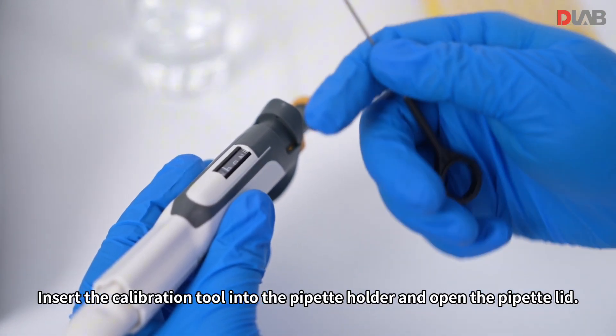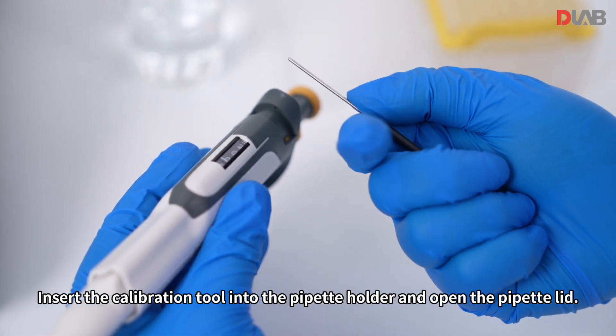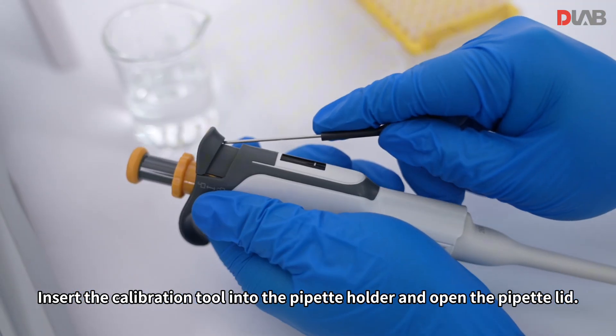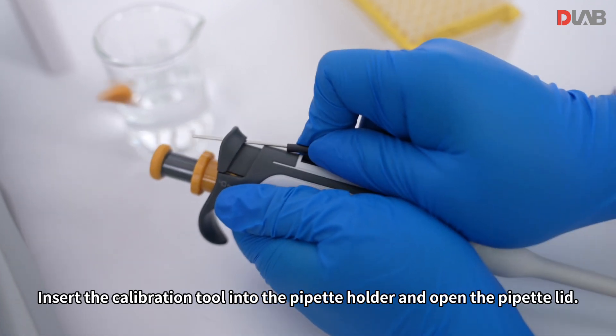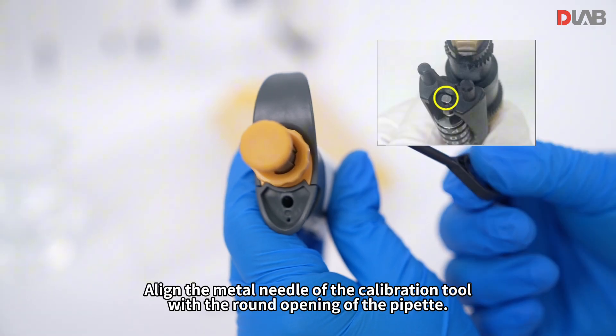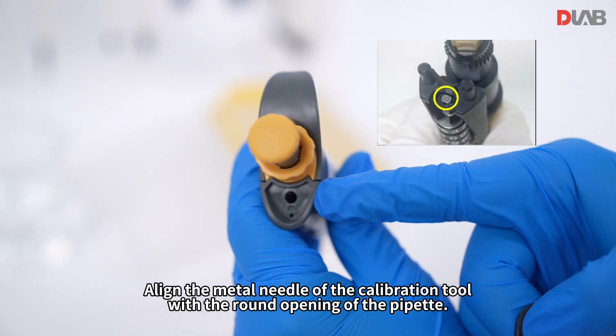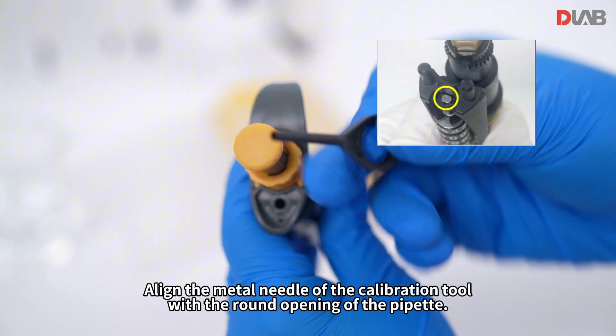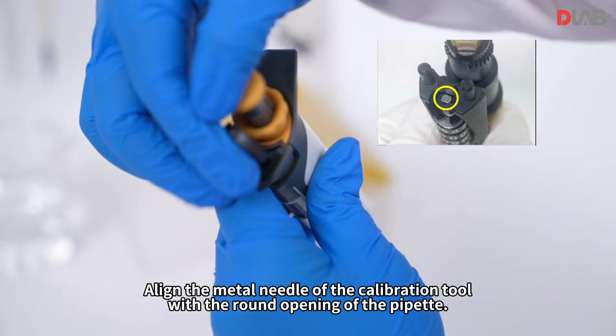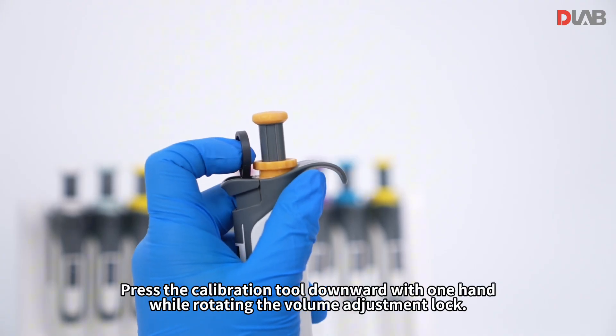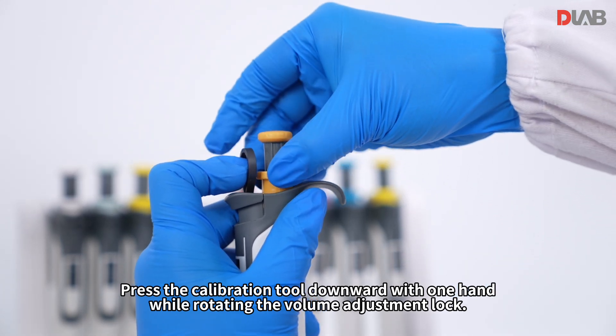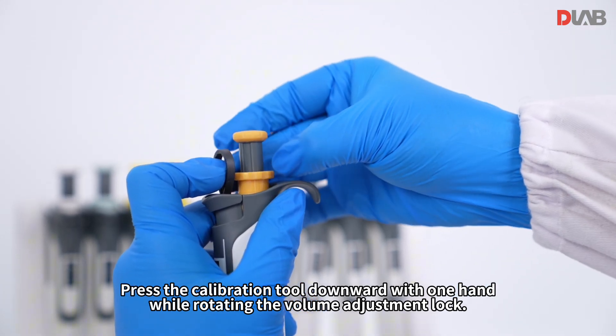Insert the calibration tool into the pipette holder and open the pipette lid. Align the metal needle of the calibration tool with the round opening of the pipette. Press the calibration tool downward with one hand while rotating the volume adjustment lock.